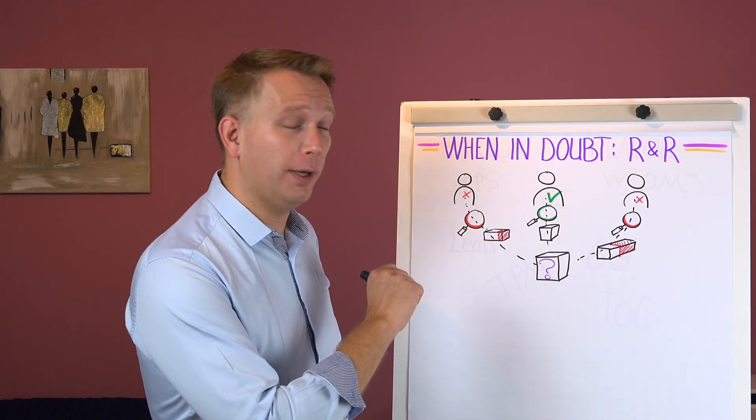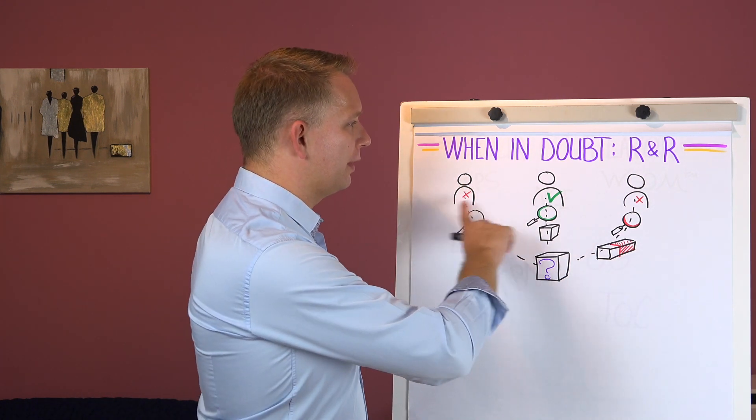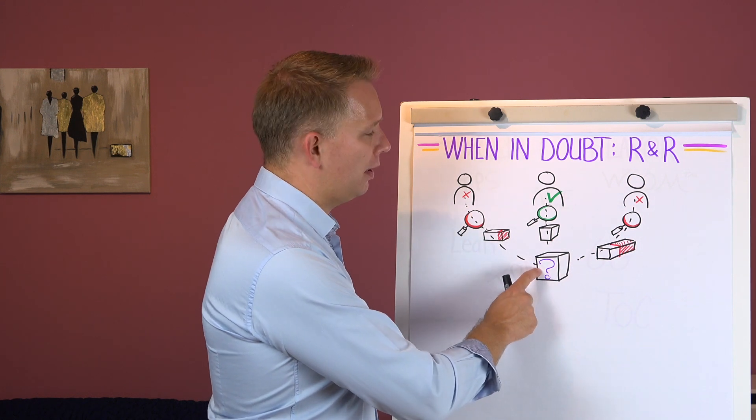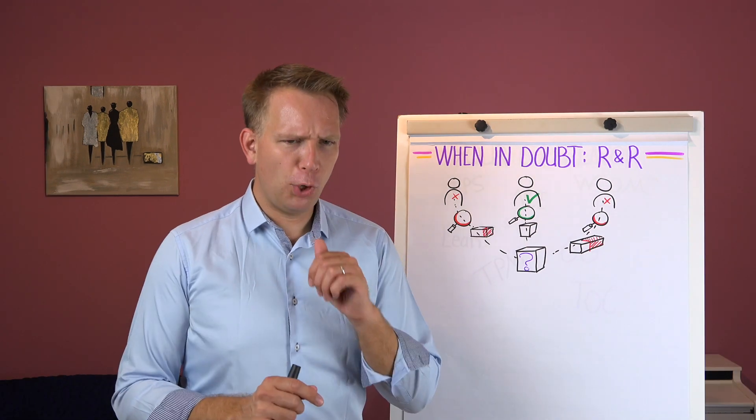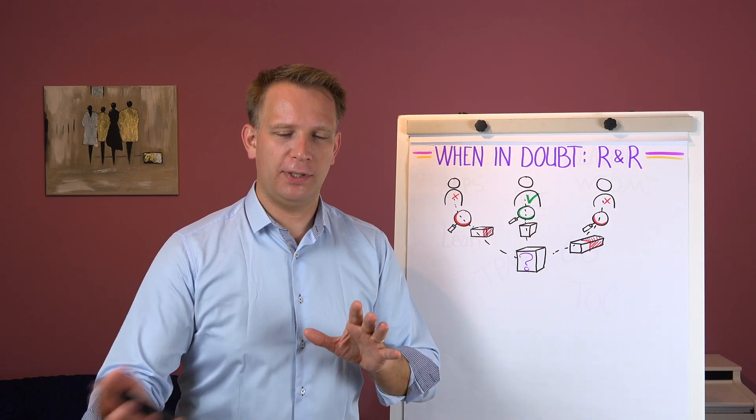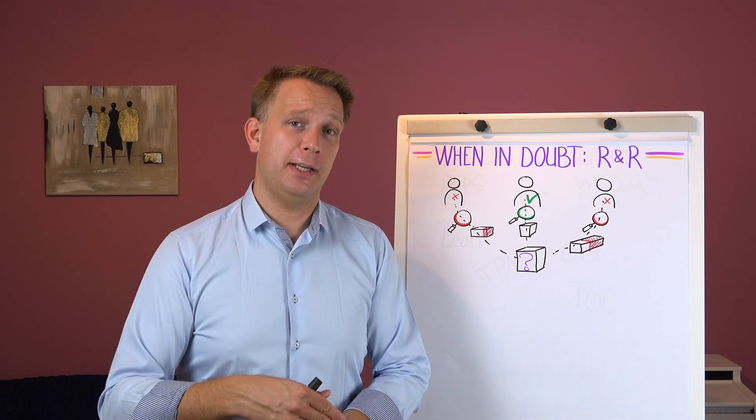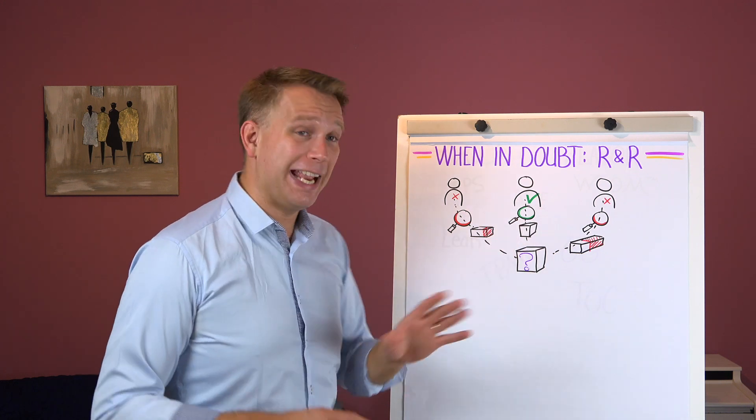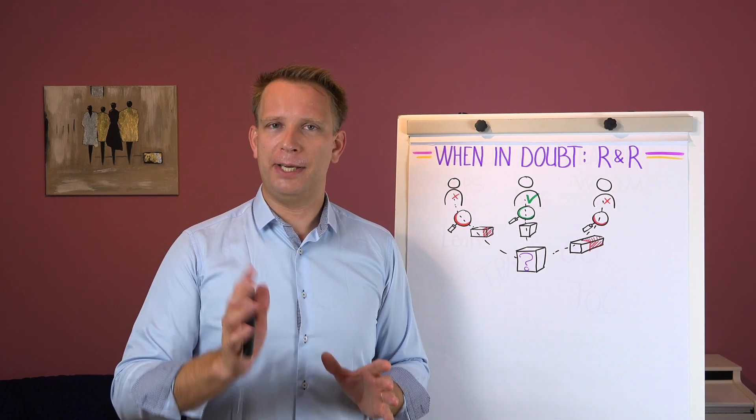And that is what gauge R&R is all about. Can we repeat and reproduce that same measurement? So when we do have the same product, will different people, if we really know that's the same one, will different people, both when they get that same product randomly in front of themselves and they test it a couple of times, will they at least get the same result every time? That's repeatability.